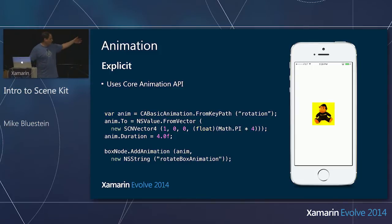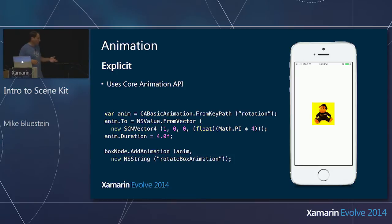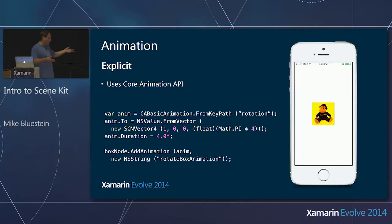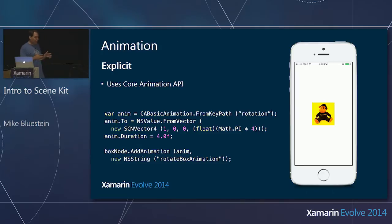I create the animation just like I've always done with Core Animation, add it to the node, and I can do complex animations. In this simple case, I just rotate it around a different axis to show it's different — that's an explicit animation. Someone with iOS experience can work with animation in this 3D graphics API without ever having really done 3D graphics work.